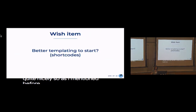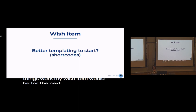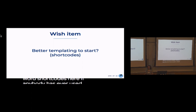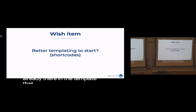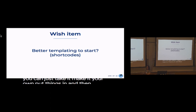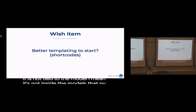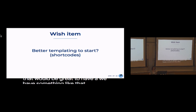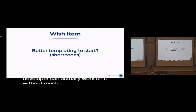As I mentioned, in terms of templating I don't quite understand how all things work. My wish item for the next iteration of Wagtail would be better templating to start — I use the word 'shortcodes' here. If anybody has ever used Hugo static site generator, they do have shortcodes, meaning the template is already there and you can customize it later. It comes out of the box, and then you take it, make it your own, put things in, and you're done. It's not tied to models.py or blocks.py — it's part of an HTML file you can customize.